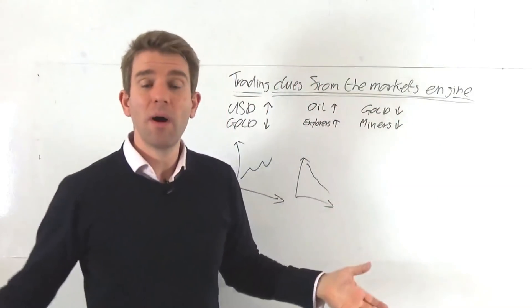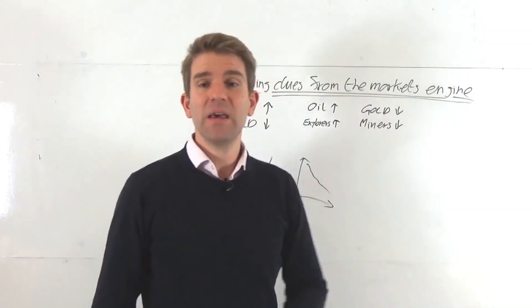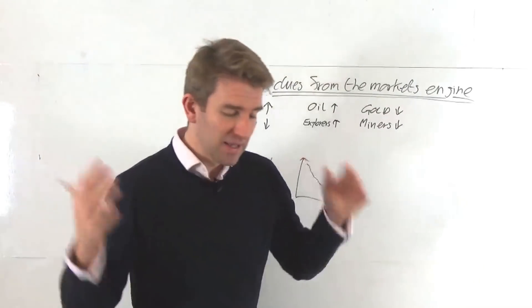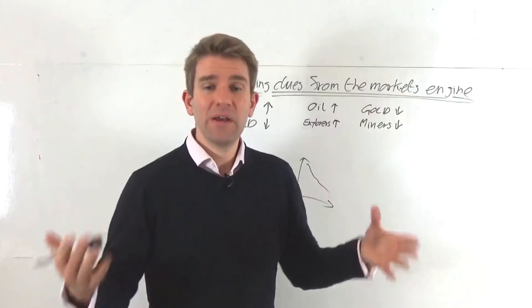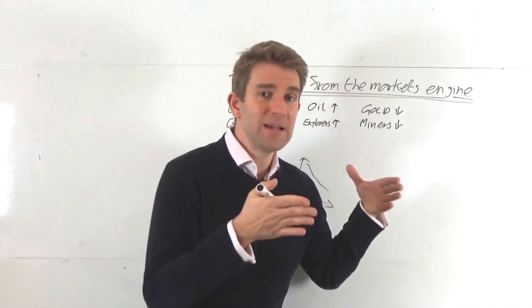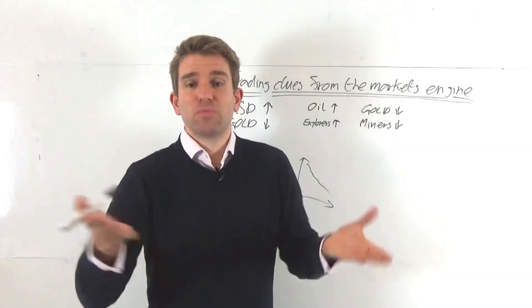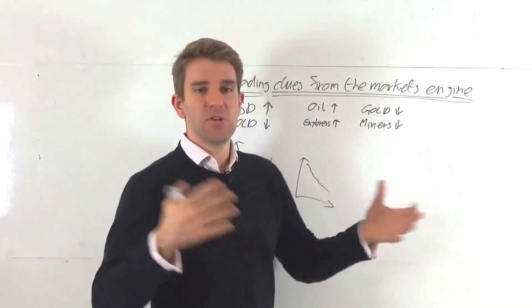And same with gold. If gold's down, gold miners are going to be down. Because if gold's down heavily, the gold miners, all of a sudden, just from nothing at all, are going to be making less money. Digging out a ton of gold from the ground, they're just going to make X for it. Now they've suddenly made 80% of X. Everything else remains the same, which is bad for a company, right? So there's these obvious relationships.